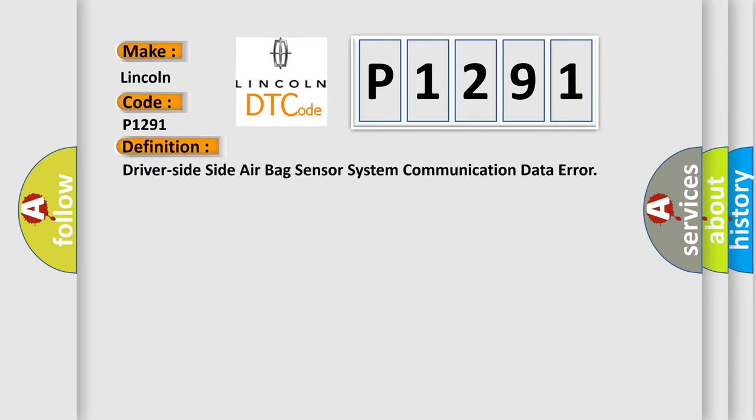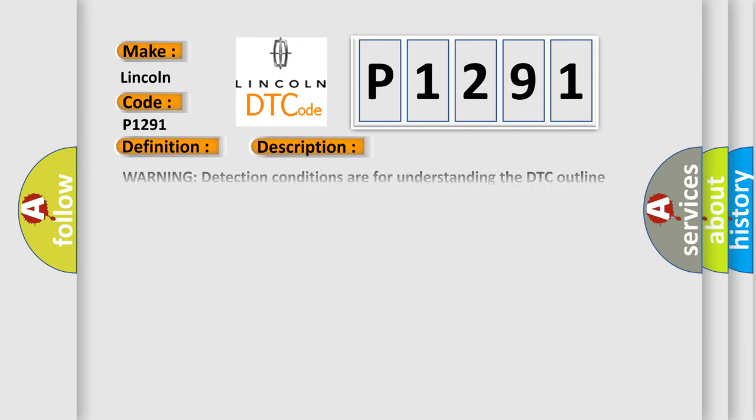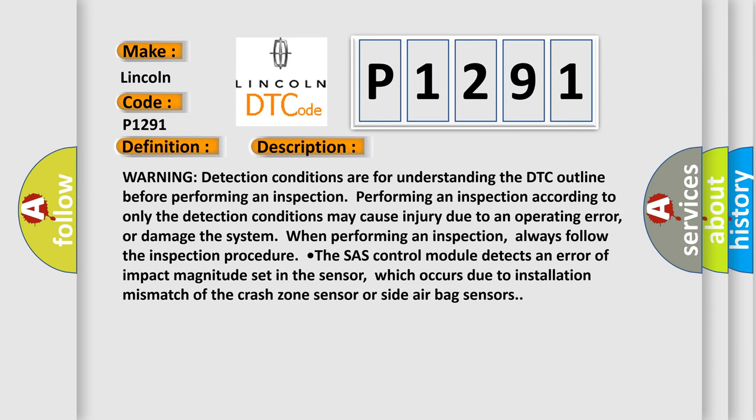The basic definition is: Driver side airbag sensor system communication data error. Warning: detection conditions are for understanding the DTC outline before performing an inspection. Performing an inspection according to only the detection conditions may cause injury due to an operating error, or damage the system. Always follow the inspection procedure. The chassis control module detects an error of impact magnitude set in the sensor, which occurs due to installation mismatch of the crash zone sensor or side airbag sensors.